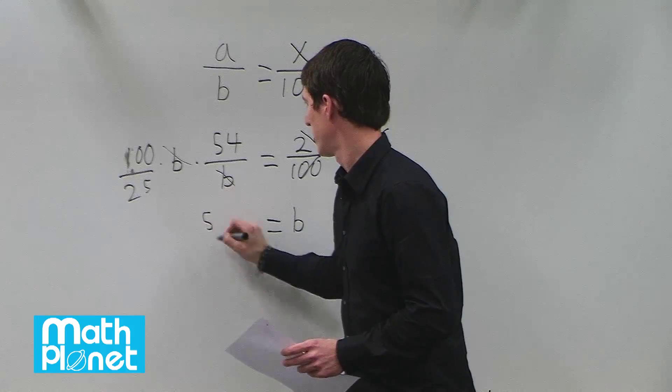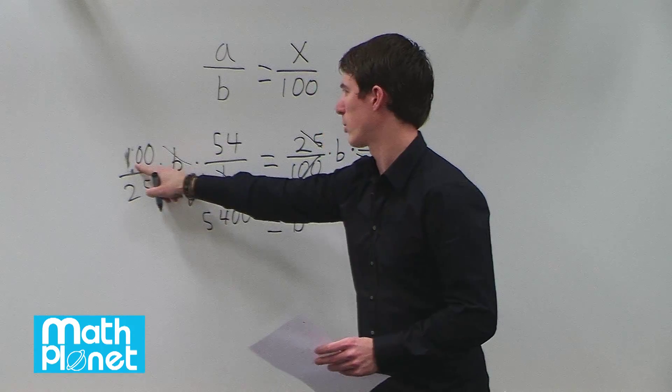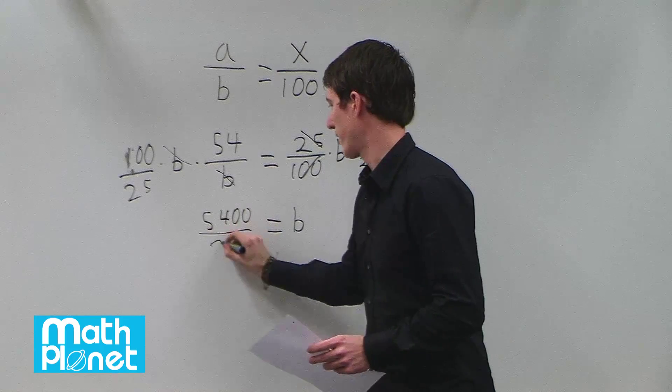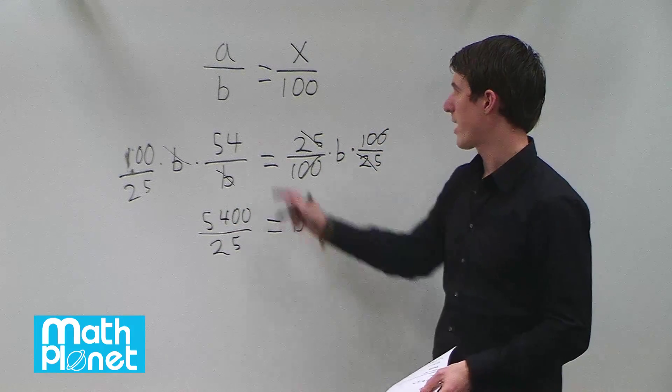And then we have 5,400. So we multiply this by 100 divided by 25. So finally we just need to do this division, and then we'll have what B is.